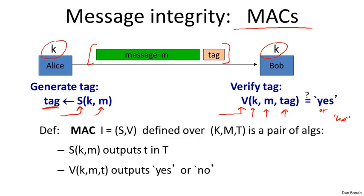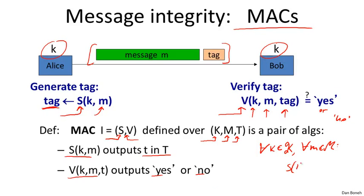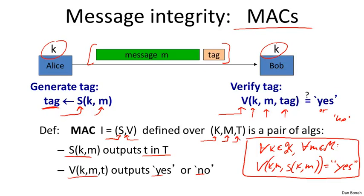More precisely, a MAC consists of two algorithms: a signing algorithm and a verification algorithm, defined over a key space, a message space, and a tag space. The signing algorithm outputs a tag in the tag space, and the verification algorithm, given the key, the message, and the tag, outputs yes or no. As usual, there is a consistency requirement: for every key K in the key space and every message in the message space, if you sign the message using key K and then verify the tag using the same key, you should get yes. This is the standard consistency requirement, analogous to the one for encryption.